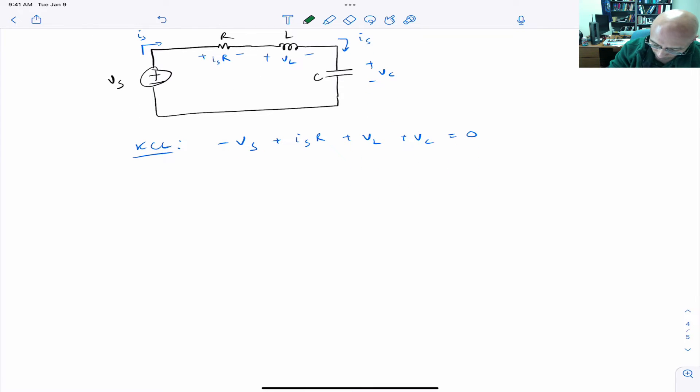Now, noting that we can get VL from the inductor voltage current relationship. We'll write this as a reminder. And another thing we can note about the capacitor is that its current looks like this. So let's use those.